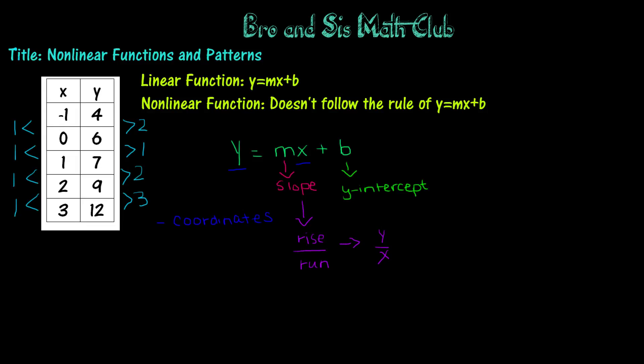So the slope here, first it's 2 over 1, then it's 1 over 1, then it's 2 over 1 again, and then 3 over 1.